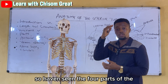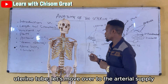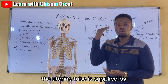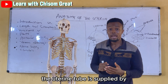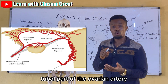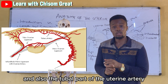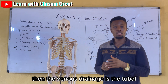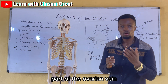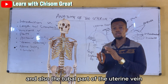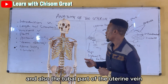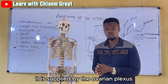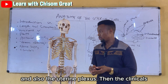Having seen the four parts of the uterine tube, let's move to the arterial supply. The uterine tube is supplied by the tubal part of the ovarian artery and also the tubal part of the uterine artery. The venous drainage is via the tubal part of the ovarian vein and the tubal part of the uterine vein. The nerve supply comes from the ovarian plexus and also the uterine plexus.